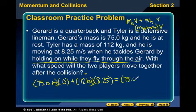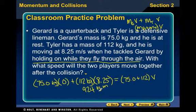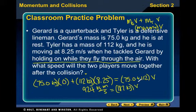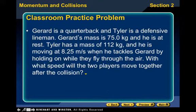We have 75 kilograms plus 112 kilograms times V. On the left side, 112 times 8.25 gives 924 kilogram·meters per second, and the 75 times zero term drops out. So 924 equals 187 times V. Dividing, V equals 4.94 meters per second.